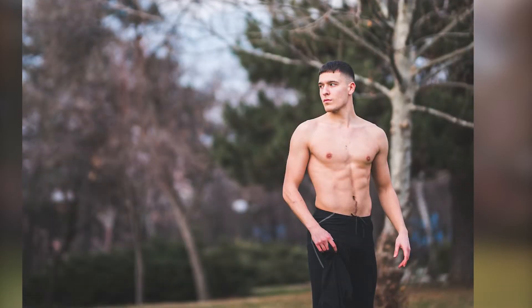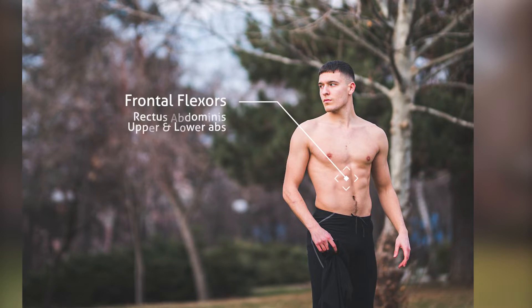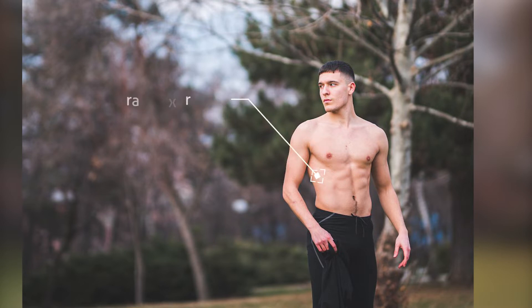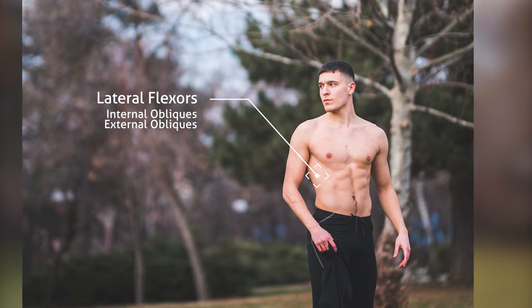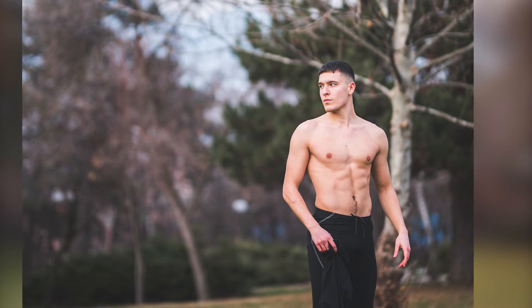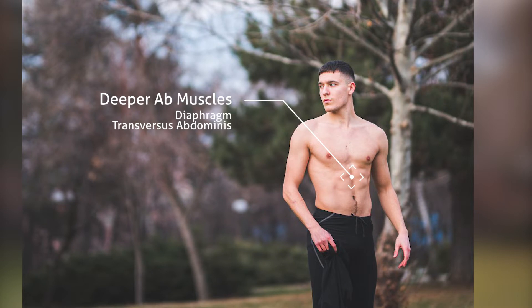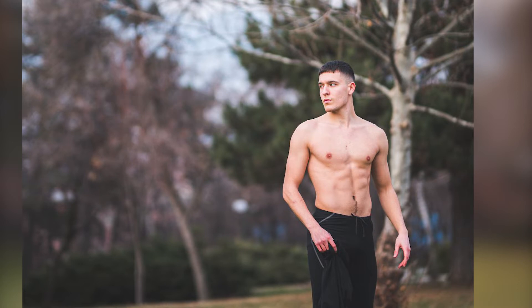The biggest, most important muscles are the frontal flexors — rectus abdominis, or what you call the six-pack abs, also divided into upper and lower abs. These help us flex the core. Next up, we have the lateral flexors, or the internal and external obliques. They function for lateral flexion and rotation. Obliques can contribute to the overall aesthetics of your core, make it appear more narrow. Then the deeper abdominal muscles: transversus abdominis and diaphragm. The diaphragm lowers when you inhale and rises when you exhale. Transversus abdominis is one of the deepest muscles, helping with lumbar spine and pelvis stabilization.